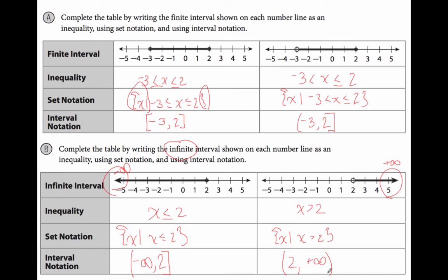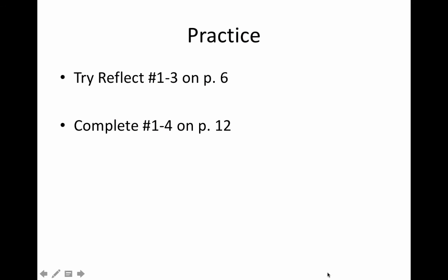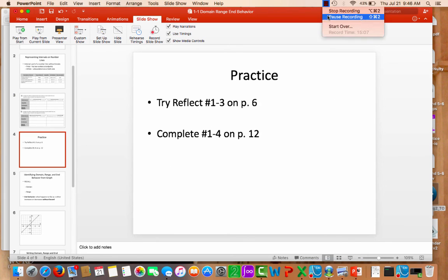What I'd like you to do now on your own: try the three reflection questions underneath the table on page 6 — we'll discuss those in class. Then go to page 12 at the end of this lesson where it says 'Evaluate: Homework and Practice,' and try questions 1 through 4. If you're stuck, re-watch my examples and look carefully at the table on page 5. Any further questions we'll discuss in class. Thank you for watching, and we'll pick up more on domain, range, and end behavior next time.